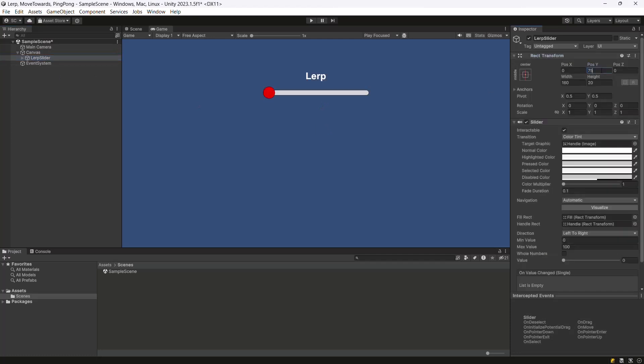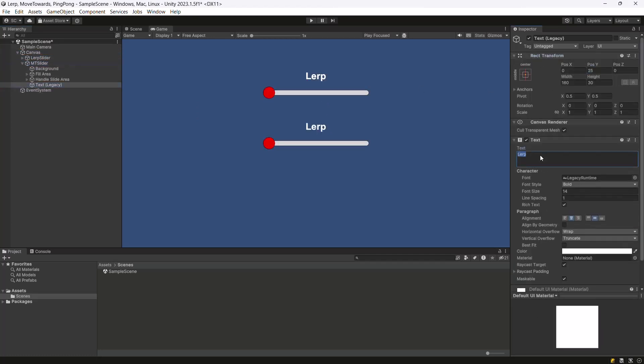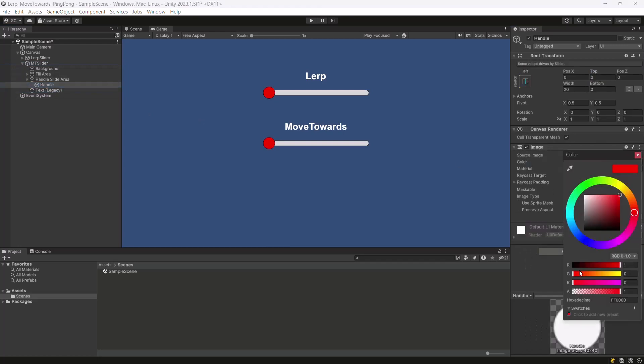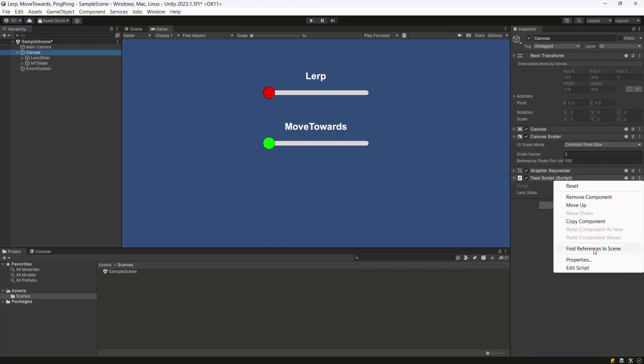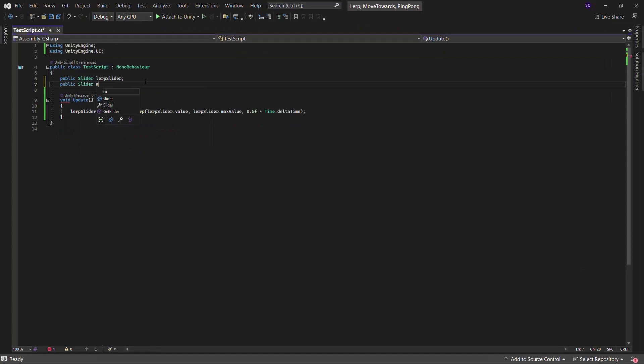Now, let's set up a slider for the MoveTowards function. Open the script and define the MoveTowards slider.